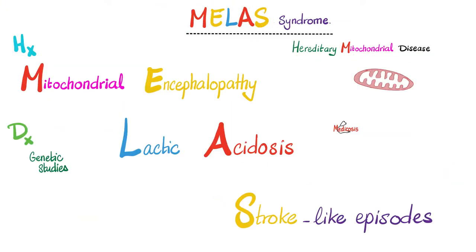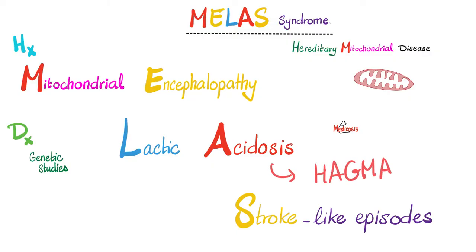The second hereditary mitochondrial disease is MELAS syndrome, which is an acronym: M for mitochondrial, E for encephalopathy, LA for lactic acidosis, and S for stroke-like episodes. When your mitochondrial DNA is damaged and your electron transport chain is not robust, you cannot make ATP, and the most active organs — such as the brain — will suffer the most. When your mitochondria are damaged, you switch to anaerobic glycolysis, which in excess causes lactic acid accumulation — lactic acidosis — leading to high anion gap metabolic acidosis, which inhibits neurons.